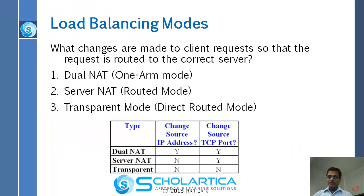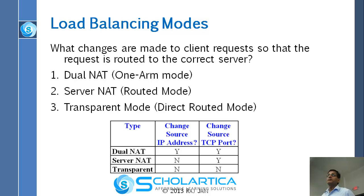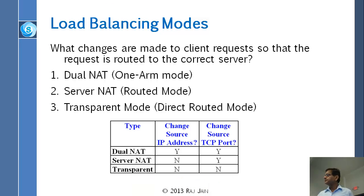These three modes really correspond to three selections: whether to change the IP, whether to change the port, or whether to change both. A normal NAT changes both the IP address and the TCP port. If you change both, that is called dual NAT. If you just change the IP port, that is called server NAT. If you change none, that is called transparent. That is the basic difference between the three modes.